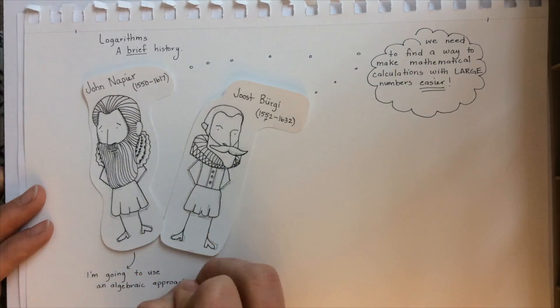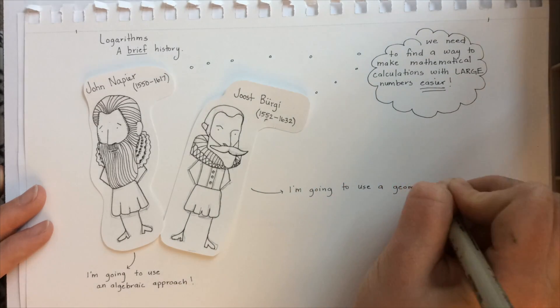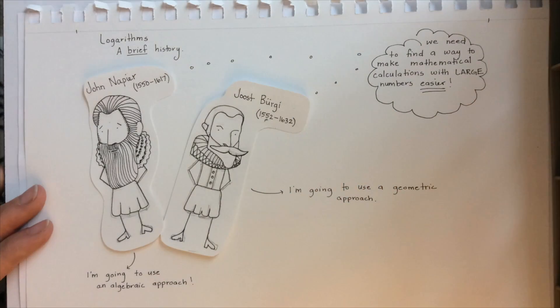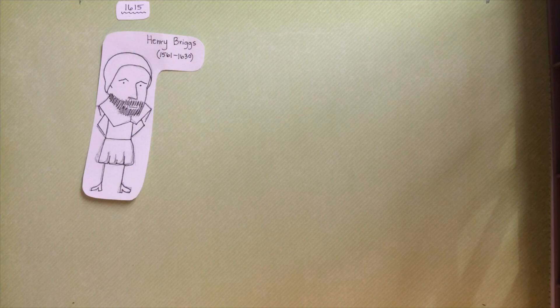While using different methods, both simultaneously used a type of logarithm to come up with reference tables. These tables would be used in order to make calculations with really large numbers a lot easier and a lot quicker. In 1615,